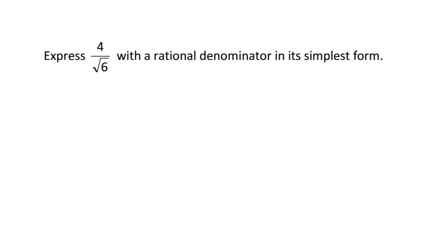Next up, we have got express 4 over root 6 with a rational denominator in its simplest form. So at the moment, we've got a surd as our denominator. Surd is an irrational number, so we need to rationalize it.